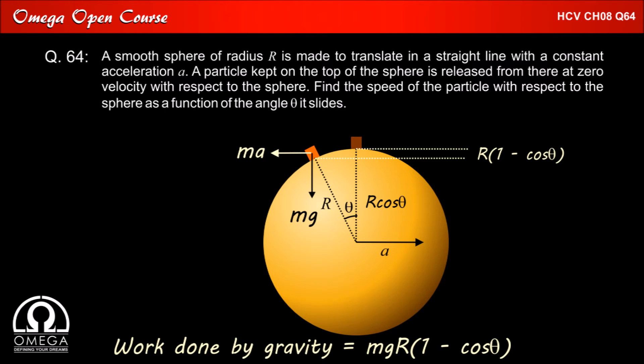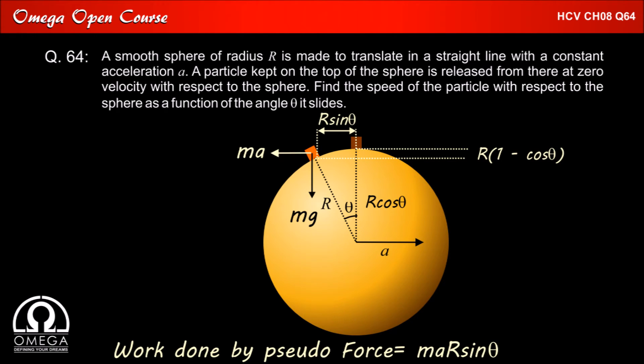Therefore, the work done by gravity on the block is Mg R into 1 minus cos theta. Also, when the block has moved by theta angle, its displacement in horizontal direction is R sin theta. Therefore, the work done by pseudo-force on the block is Ma R sin theta.